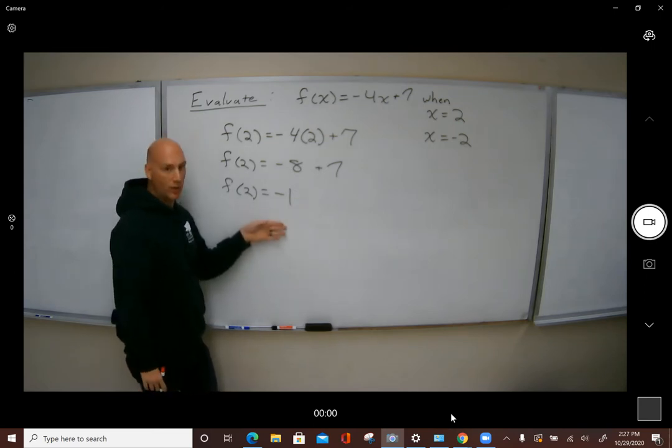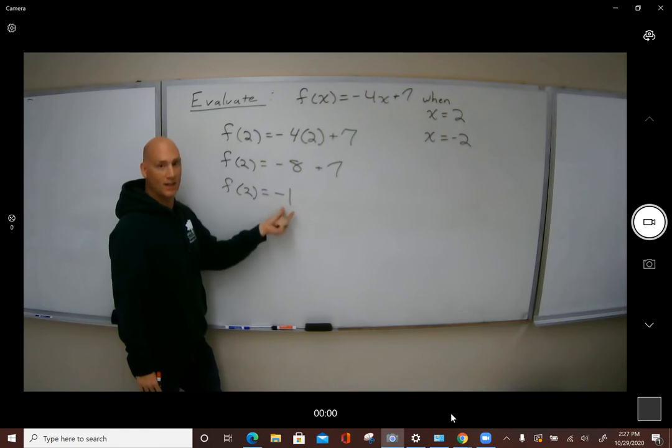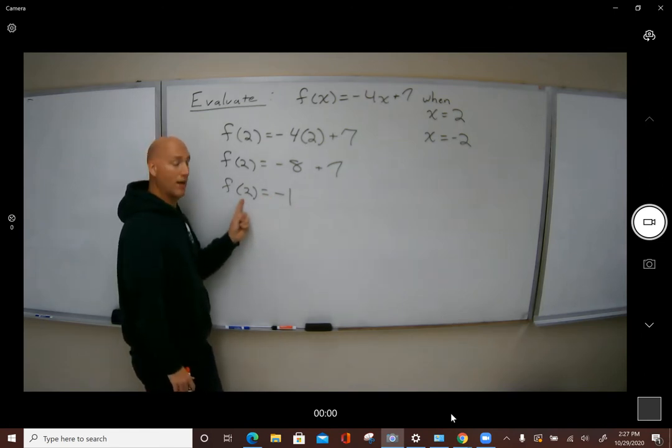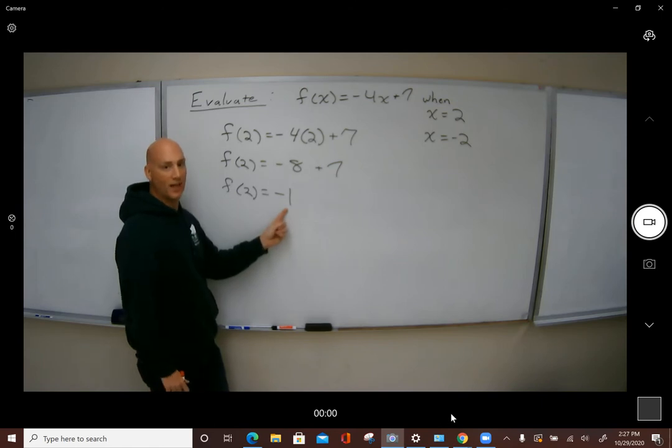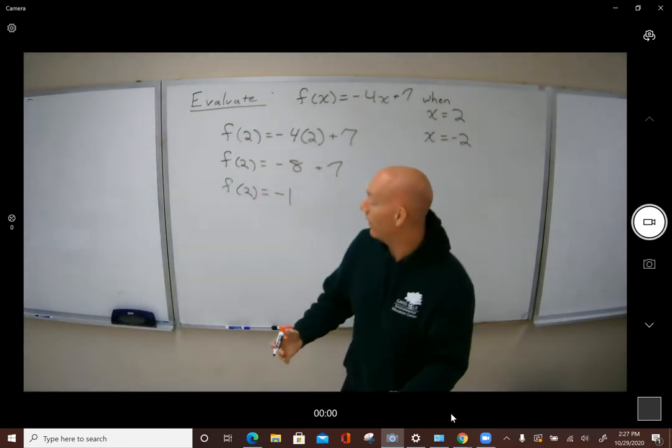But now we're going to write it in functional notation, which means the functional value of plugging in 2 is negative 1, or the relationship is if I plug in 2, my input is 2, my output is negative 1. And I know some people are going to say, well why do we have to write it this way?